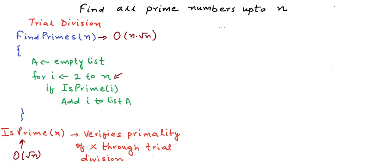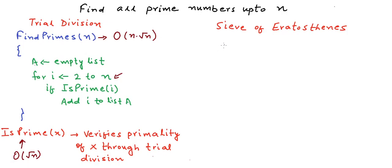There is another algorithm which is the simplest and one of the most efficient algorithms to find all prime numbers up to a given number. The name of this algorithm is the Sieve of Eratosthenes — an ancient algorithm named after the Greek mathematician Eratosthenes. In this algorithm, we first create a list of all numbers from 2 to n and initially say that all of them are prime.